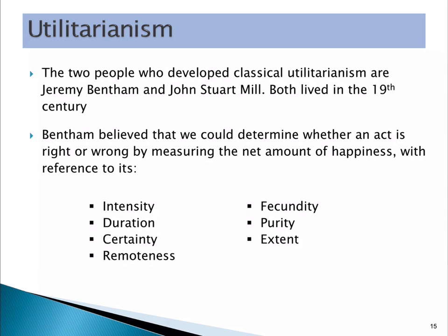There's a long history behind utilitarianism. Two classic philosophers in the area, Bentham and John Stuart Mill, are most closely associated with it. Bentham came up with a kind of calculus to work out how you determine what is good, pleasure, or happiness. He said there are seven kinds of things we need to look at.